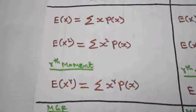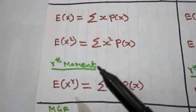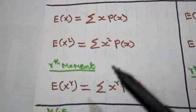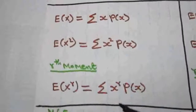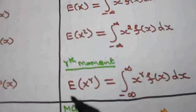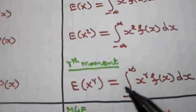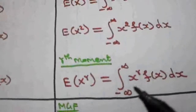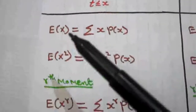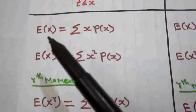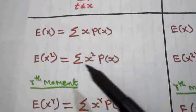In general, the r-th moment E(x^r) for a discrete random variable is the summation of x^r·p(x). For a continuous random variable, E(x^r) is the integral from minus infinity to plus infinity of x^r·f(x) dx. Here, the first moment is E(x) and the second moment is E(x²). The first moment E(x) is always called the mean value.